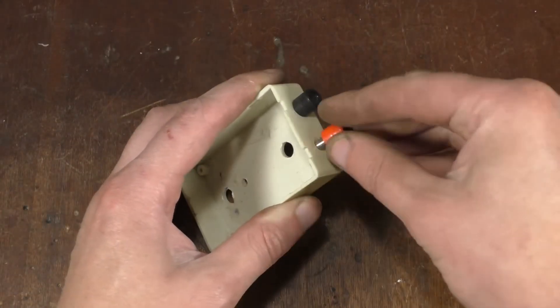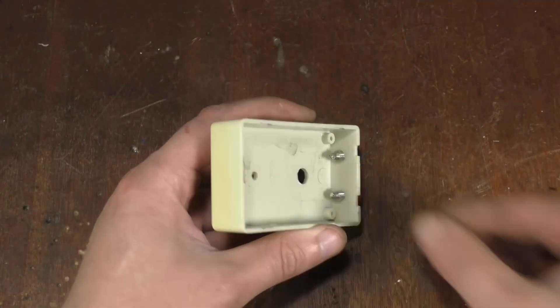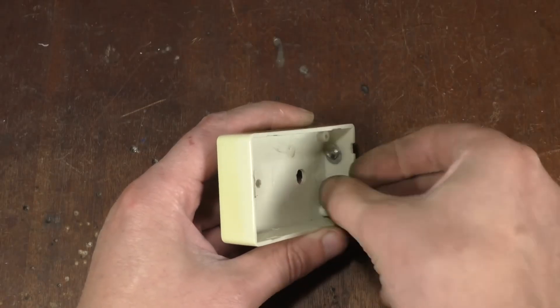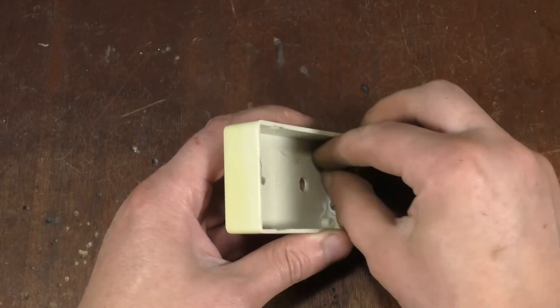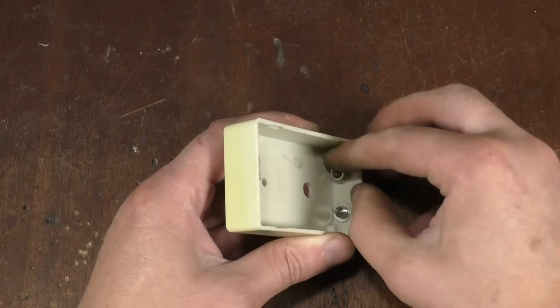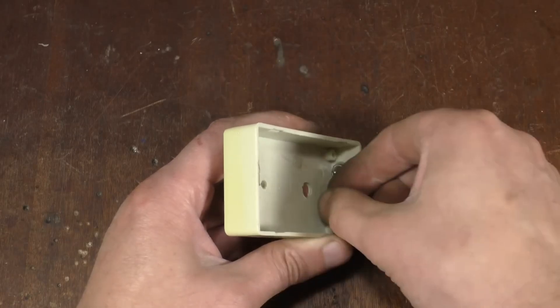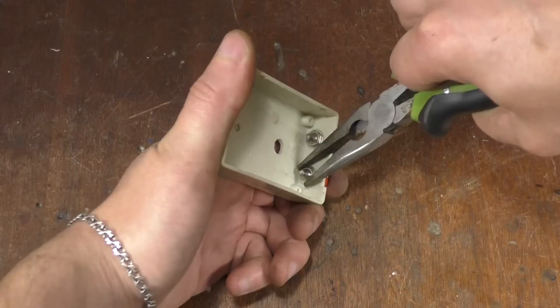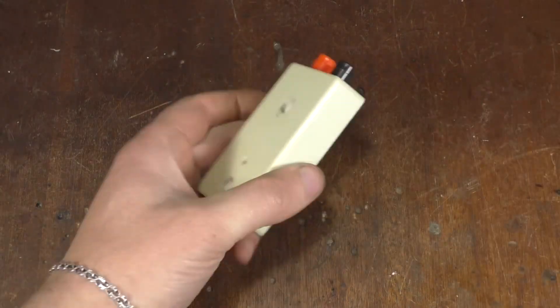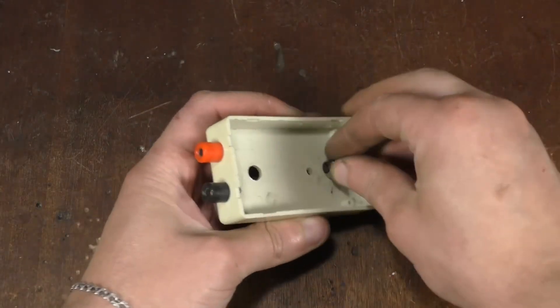Into the holes you've made, insert two connectors on the side, also insert one connector at the top of the box.